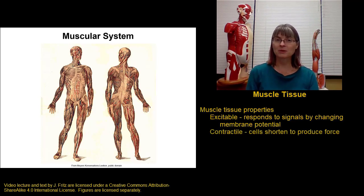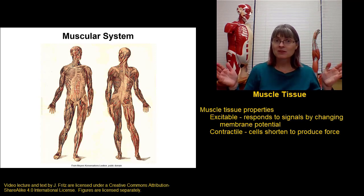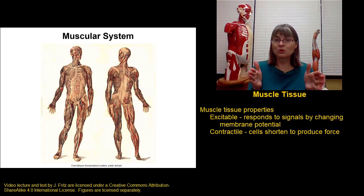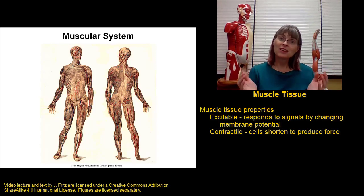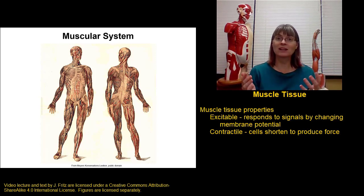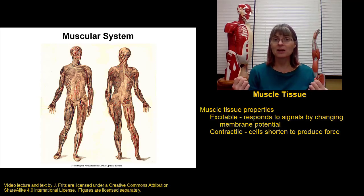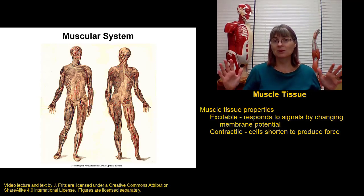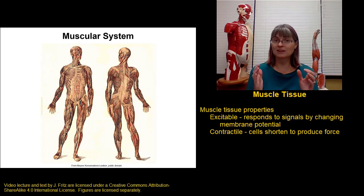Another important property of muscle tissue is that it is contractile. That means that muscle cells get shorter, and as they get shorter it produces force. This is the property that actually allows the muscles to carry out their functions of movement and stability — the ability to contract and produce force.